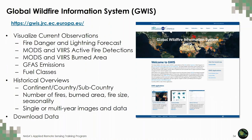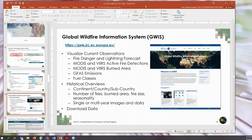GWIS, or the Global Wildfire Information System, brings together current and historical fire-relevant information on regional and national levels. Session 2 introduced this tool and discussed land cover and fuel type. Here, I'm going to briefly walk you through the website and show you how to create a map like the one shown on the previous slide.